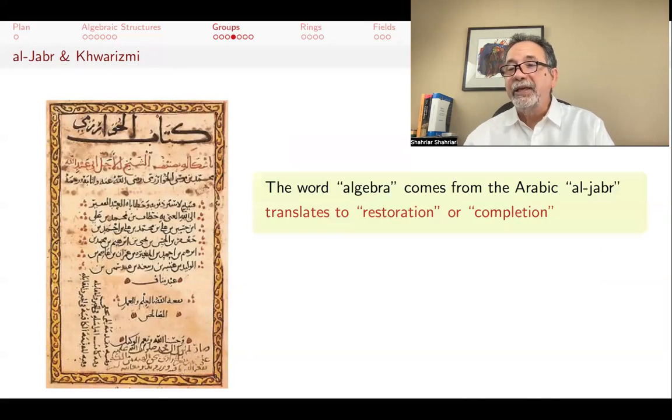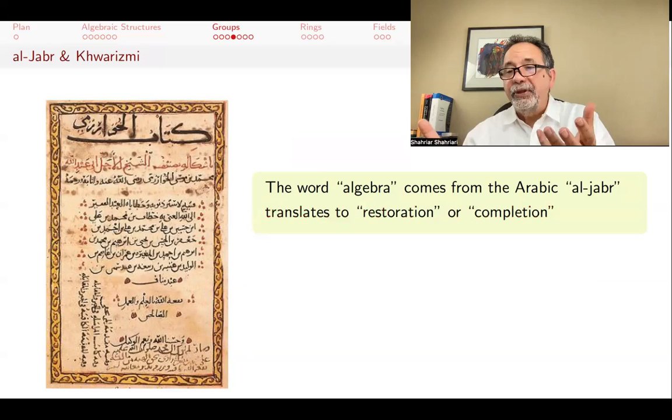The word algebra comes from the Arabic. Al is just a definite article, the, and jabr translates to restoration or completion. If in an equation, one side is missing something, you can add that quantity to both sides. You can restore it on one side as long as you add it to the other. This operation is what al-jabr means.